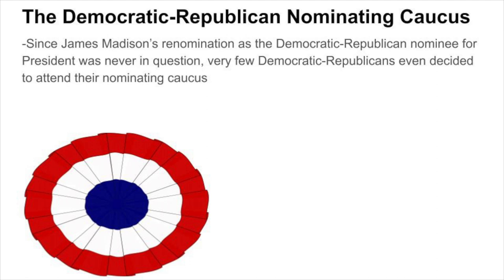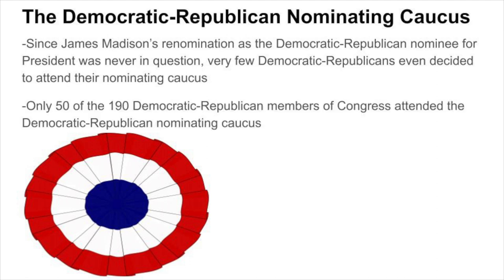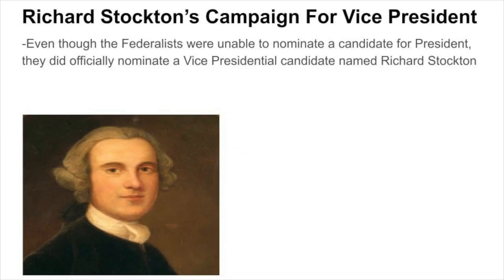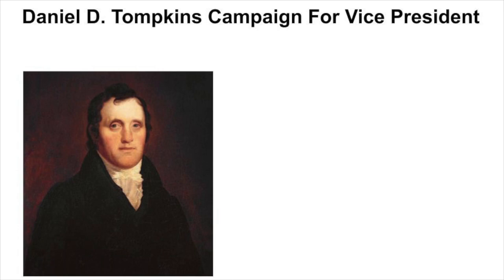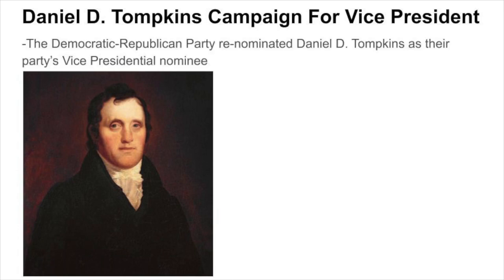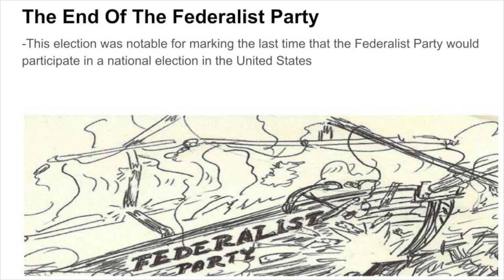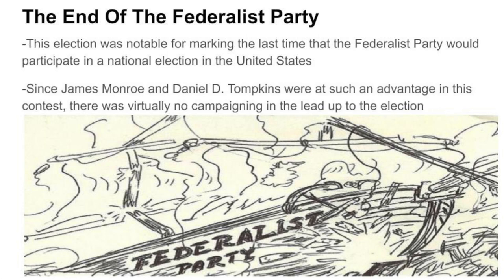Since James Monroe's re-nomination as the Democratic-Republican nominee was never in question, very few Democratic-Republicans even decided to attend their nominating caucus, with only 50 of the 190 Democratic-Republican members of Congress attending. Even though the Federalists were unable to nominate a candidate for president, they did officially nominate a vice presidential candidate named Richard Stockton, who was one of America's original founding fathers. Meanwhile, the Democratic-Republican Party re-nominated Daniel D. Tompkins as their vice presidential nominee. This election was notable for marking the last time that the Federalist Party would participate in a national election. Since Monroe and Tompkins were at such an advantage, there was virtually no campaigning in the lead-up to the election.